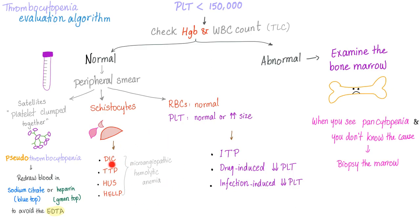Here is a cute mnemonic song: DIC, TTP, HUS, HELP ME. Next, if the red blood cells are normal and platelets are normal or increased in size, it could be ITP, drug-induced thrombocytopenia, or infection-induced thrombocytopenia.